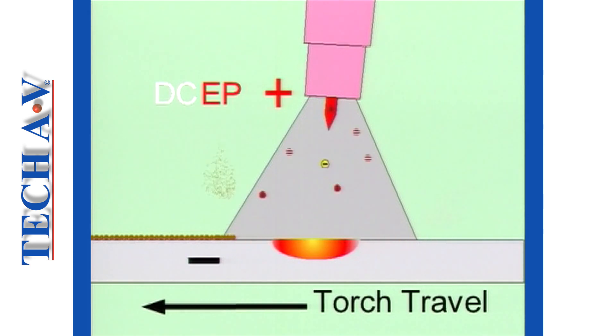In the reverse polarity mode, gas ions are attracted to the base metal, where they literally bombard the metal like the pellets of a shotgun. This bombardment of ions breaks away the oxides, leaving a clean surface onto which the molten weld pool will flow. It must be noted that with straight polarity there is no cleaning action.